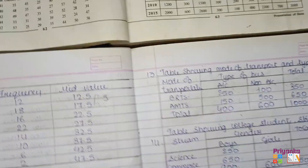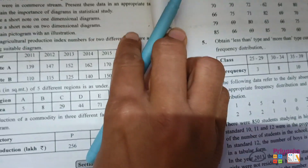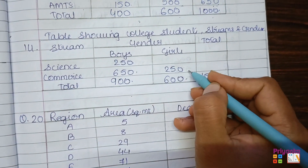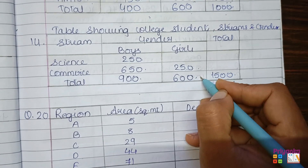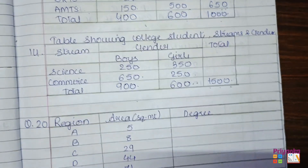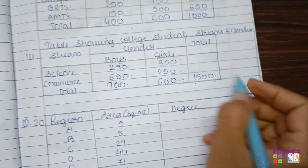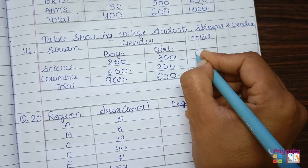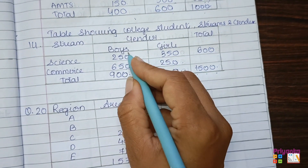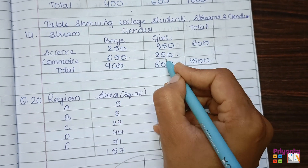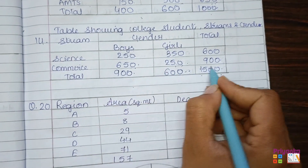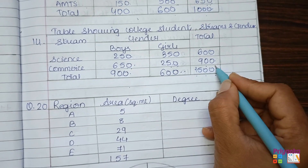250 girls were in the commerce stream, so 600 minus 250 gives 350, which will be the girls in the science stream. Total students in science stream: 250 plus 350 equals 600. For commerce, boys plus girls: 650 plus 250 gives 900 total students in the commerce stream.